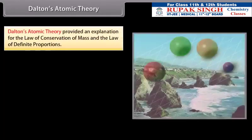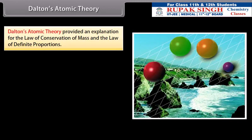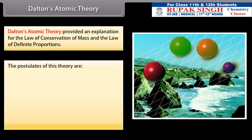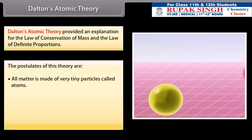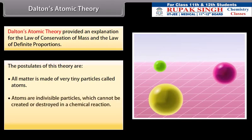Dalton's atomic theory. Dalton's atomic theory provided an explanation for the law of conservation of mass and the law of definite proportions. The postulates of this theory are: 1. All matter is made of very tiny particles called atoms. 2. Atoms are indivisible particles which cannot be created or destroyed in a chemical reaction.